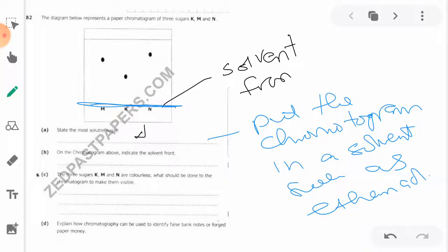Part D explains how chromatography can be used to identify false or forged paper money. How can you use chromatography to identify fake money? That's what they're asking us.